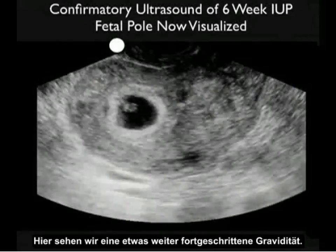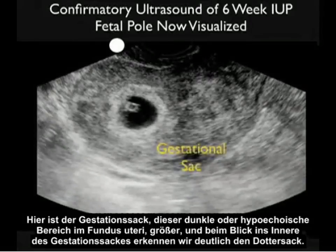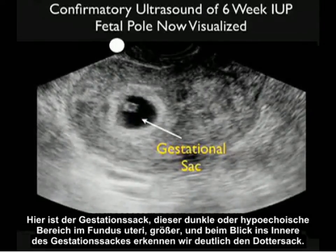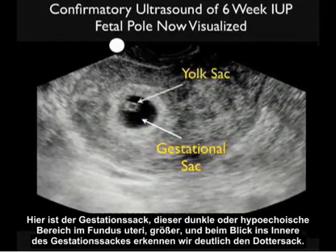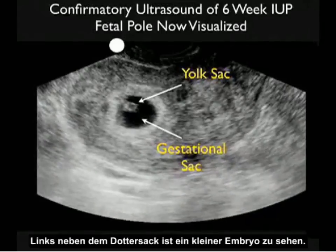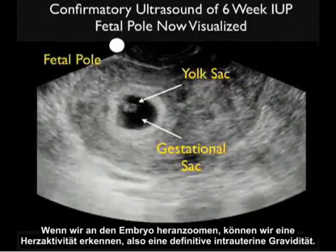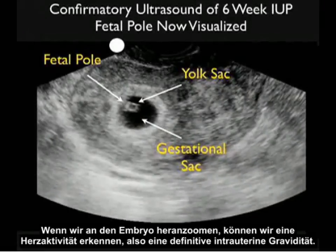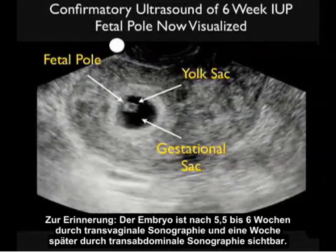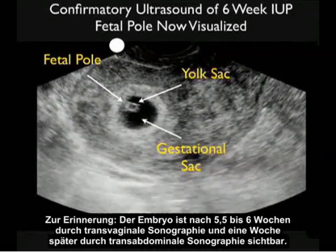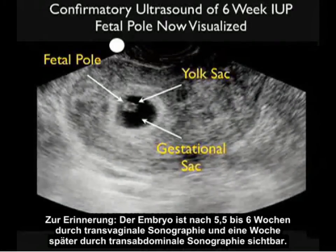Here we see a pregnancy that is a bit further advanced. There's a larger gestational sac — the darker hypoechoic area within the fundal region of the uterus — and inside we see the positive yolk sac or cheerio. Just to the left of the yolk sac is a tiny fetal pole, and zooming in on that fetal pole we can make out the flicker of a heartbeat — a definitive intrauterine pregnancy. The fetal pole is seen at about 5.5 to 6 weeks on transvaginal sonography and about a week later on transabdominal sonography.